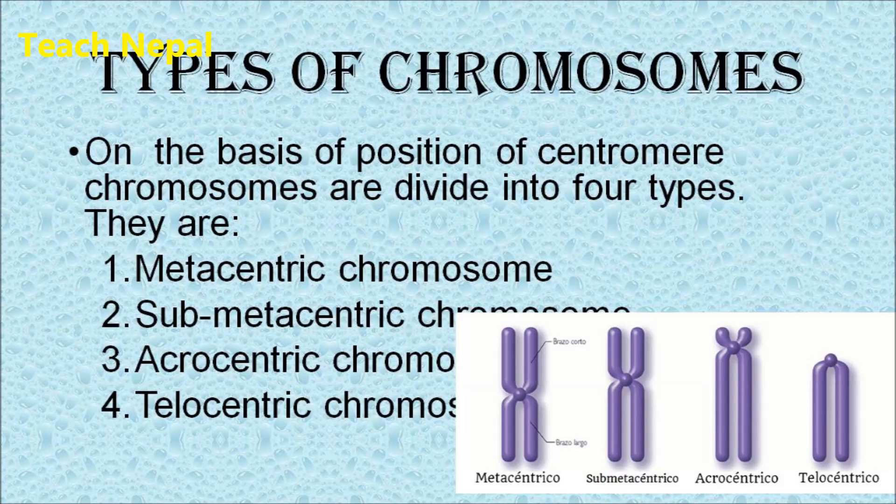The first type is the metacentric chromosome. If the centromere is located exactly at the center, dividing the chromosome into two equal halves, then it is known as a metacentric chromosome. That means the centromere is exactly in the center, making both arms of equal length.